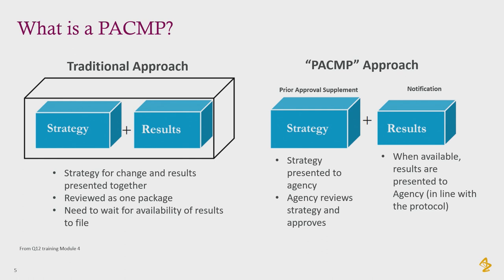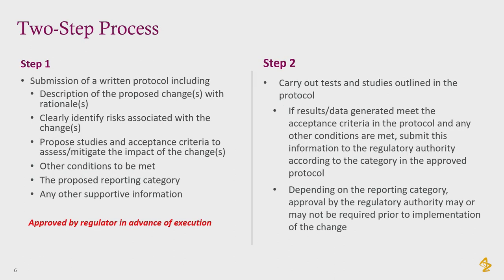What a PACMP allows us to do is make this a split. Now that sounds less efficient because we've got two regulatory instruments, but actually we have the ability to discuss the strategy with the agency first, modify and agree it, and move forward before we actually generate any data — and that's a real advantage. That first submission is usually quite intensive, perhaps a prior approval supplement or a type 2. But the second submission with the data is usually a lower classification and, because we've already agreed how we'll approach it, it becomes a much less intensive operation.